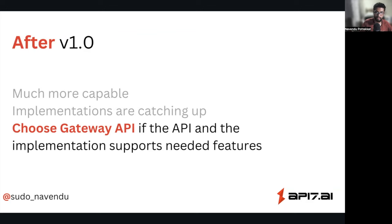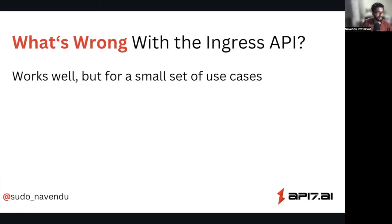You can also get an idea about how the Gateway API evolved over the past years, why it was created in the first place, and where it is going. The first question you probably have is: why do you need the Gateway API in the first place? You have an Ingress API that does the same thing — why do we need it? What's wrong with the Ingress API?